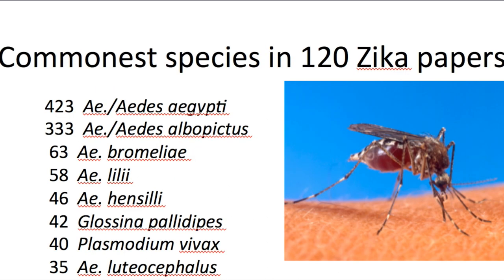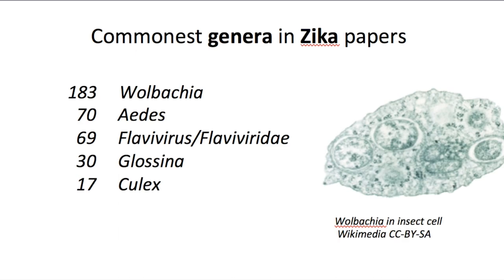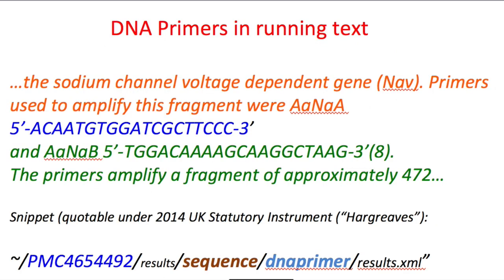Here are the commonest species — you can see mosquitoes are among them, but we also have the plasmodium malarial parasite. Here are the commonest genes, and CYP is a metabolic gene. Other species include bacteria — Wolbachia is a bacterium which invades mosquitoes and kills them. And we can even find DNA in this: here is an example of running text, and this DNA is in the middle of it, and we can pull that out and identify it by context.